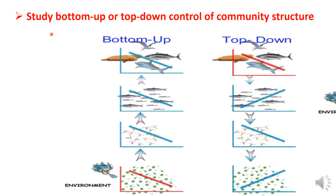Next significance: studying bottom-up or top-down control of community structure. In bottom-up control, trophic level 1 — that is, the bottom level — plants are the first trophic level. Plant population densities control the abundance of the herbivore population.